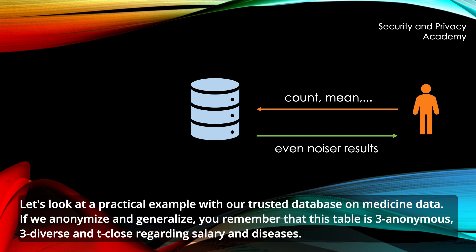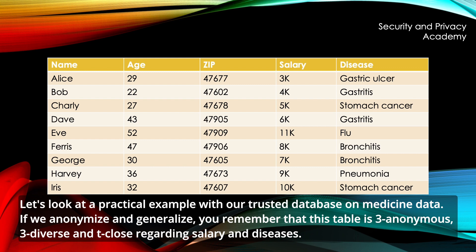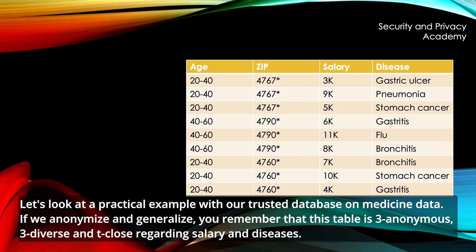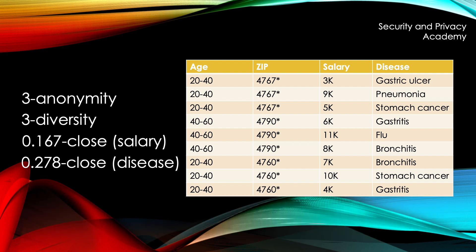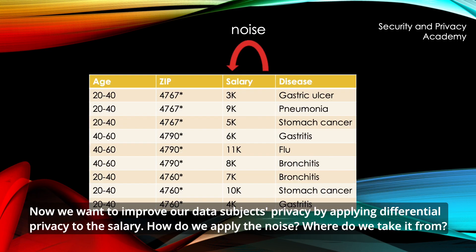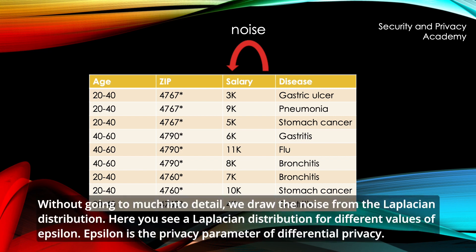Let's look at a practical example with our trusted database on medicine data. If we anonymize and generalize, you may remember that this table is 3-anonymous, 3-diverse, and T-close regarding salary and diseases. Now we want to improve our data subjects' privacy by applying differential privacy to the salary. How do we apply the noise, and where do we take it from? Without going into too much detail, we draw the noise from the Laplacian distribution.